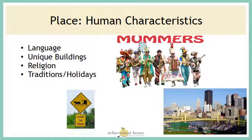The human characteristics are man-made characteristics — the language, unique buildings that are built there, the religions that are followed in a certain place, and traditions and holidays that are celebrated. For example, the Mummer's Parade is a human characteristic of the city of Philadelphia; they don't have a Mummer's Parade in Pittsburgh. The Amish crossing sign is a human characteristic of Lancaster. You wouldn't see that in Pittsburgh because there are no horse and buggies there. The human characteristics of Pittsburgh in the picture include the bridge, the buildings, and the baseball stadium.